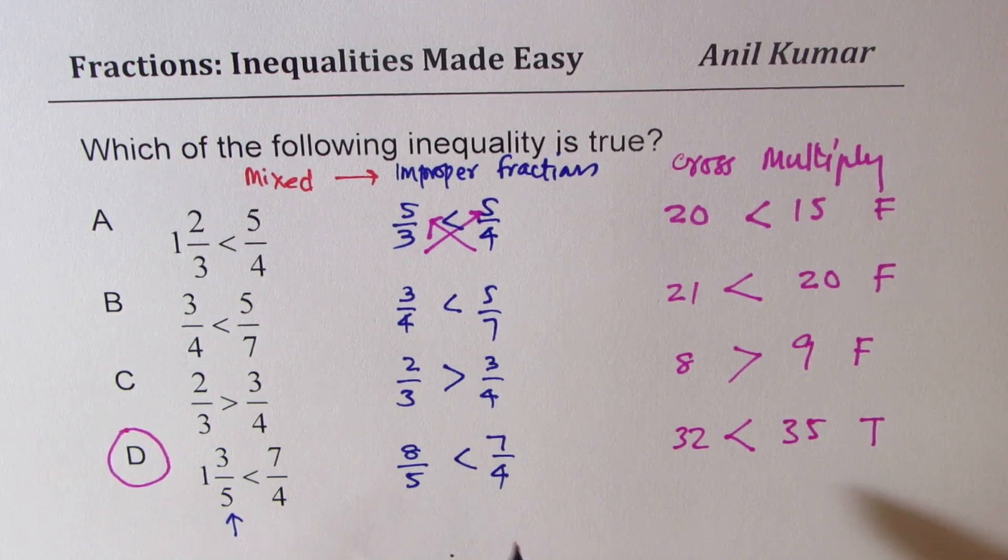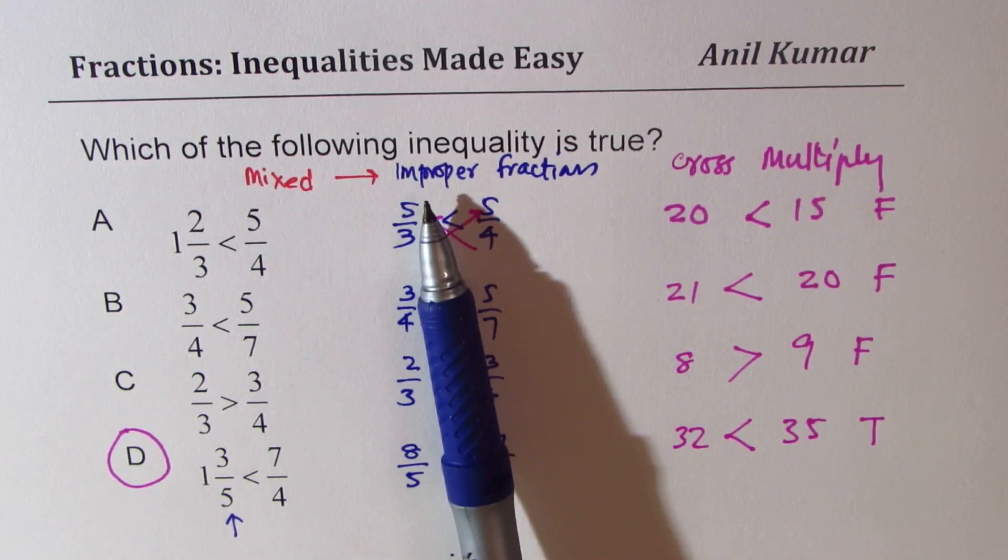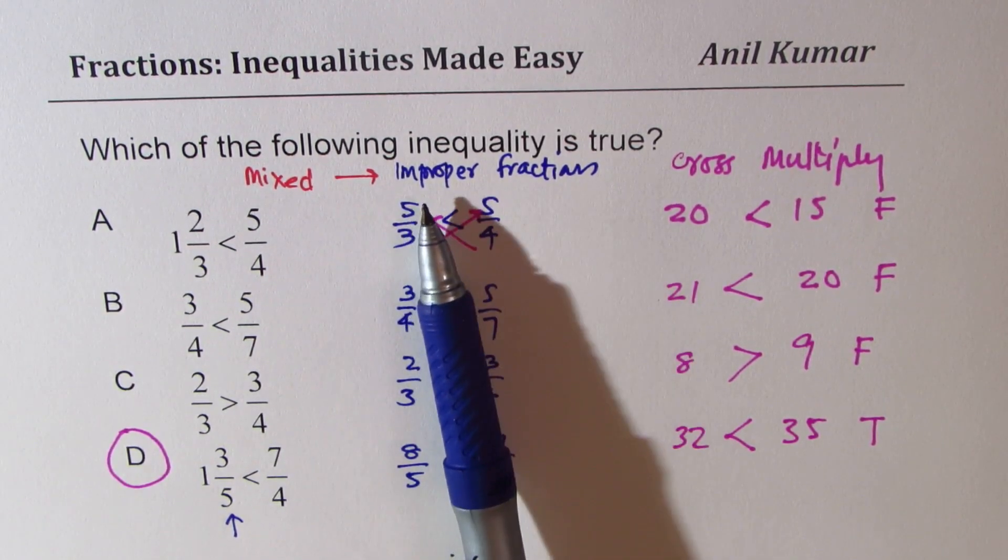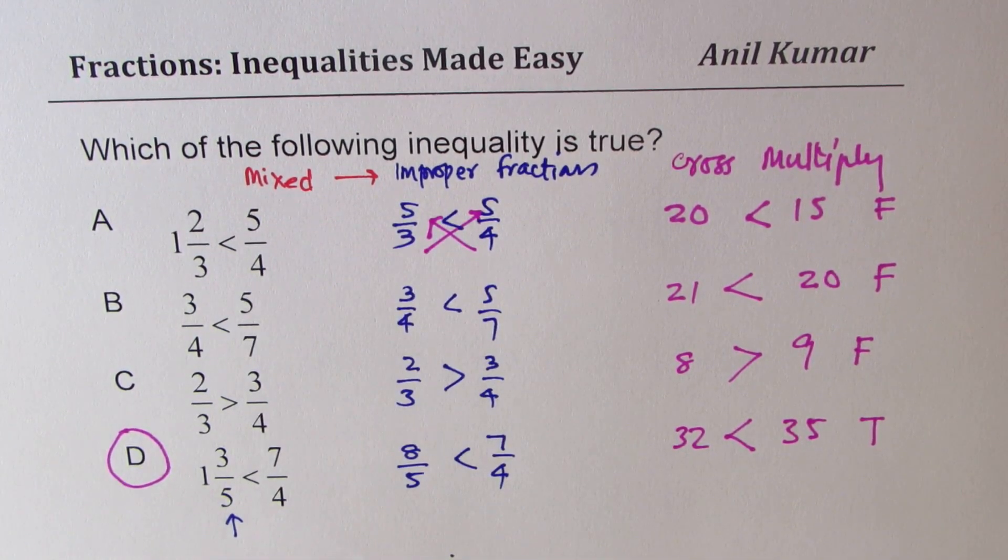You got the idea? So cross multiplying helps to get immediate answer. So in fractions, if you have to solve for inequalities, cross multiply and check. We have added this step of writing mixed numbers to improper. At times, you may need it, but not always. So I hope that helps. Now feel free to write your comments and share your views for watching and all the best.